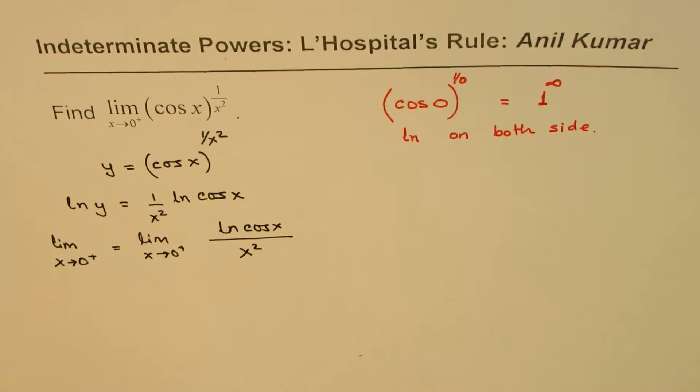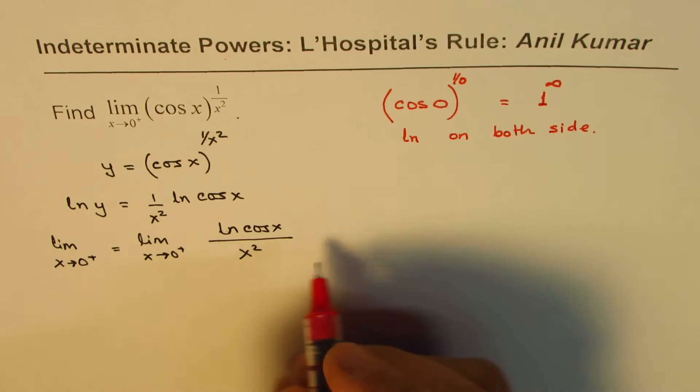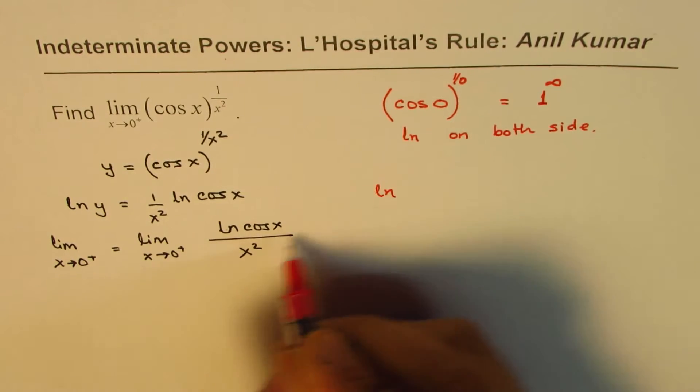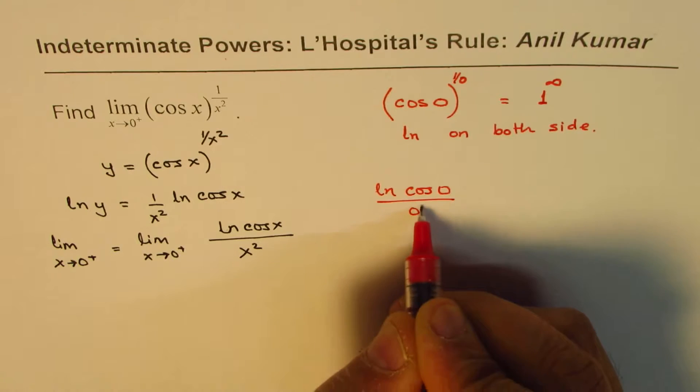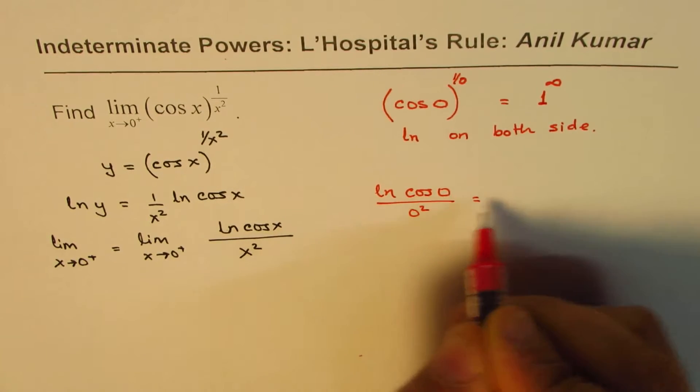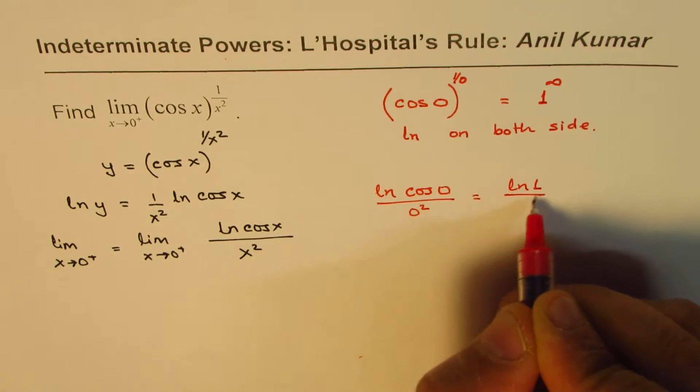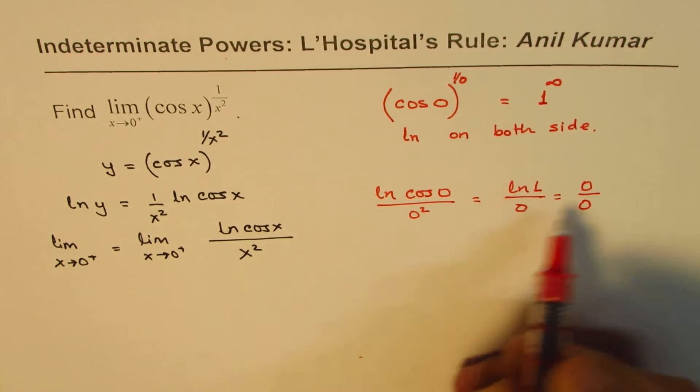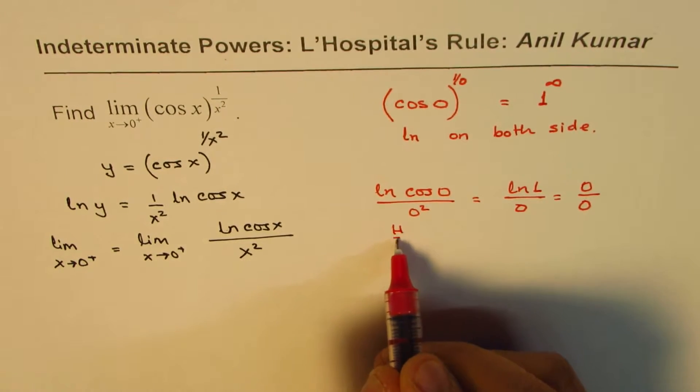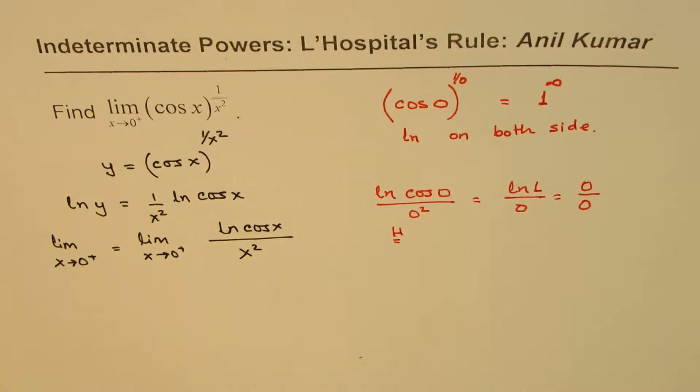Now here you can see, if I substitute 0, I get ln cos 0 divided by 0 squared. Cos 0 is 1, so we get ln 1 over 0, and ln 1 is 0. So we get 0 over 0. Since we get 0 over 0, we can apply L'Hospital's rule.